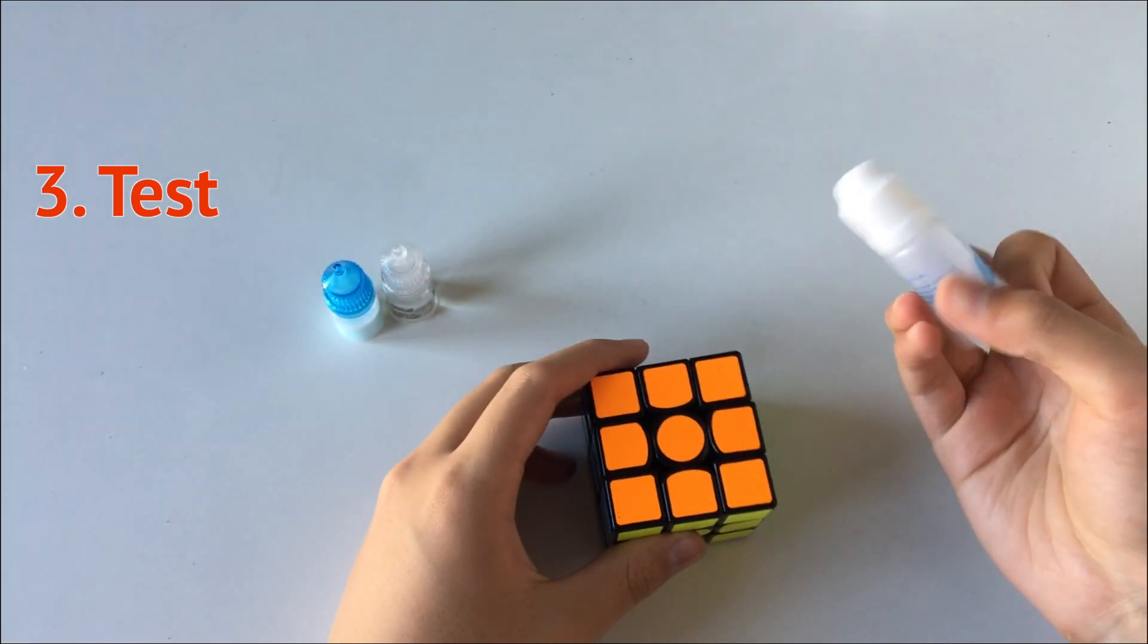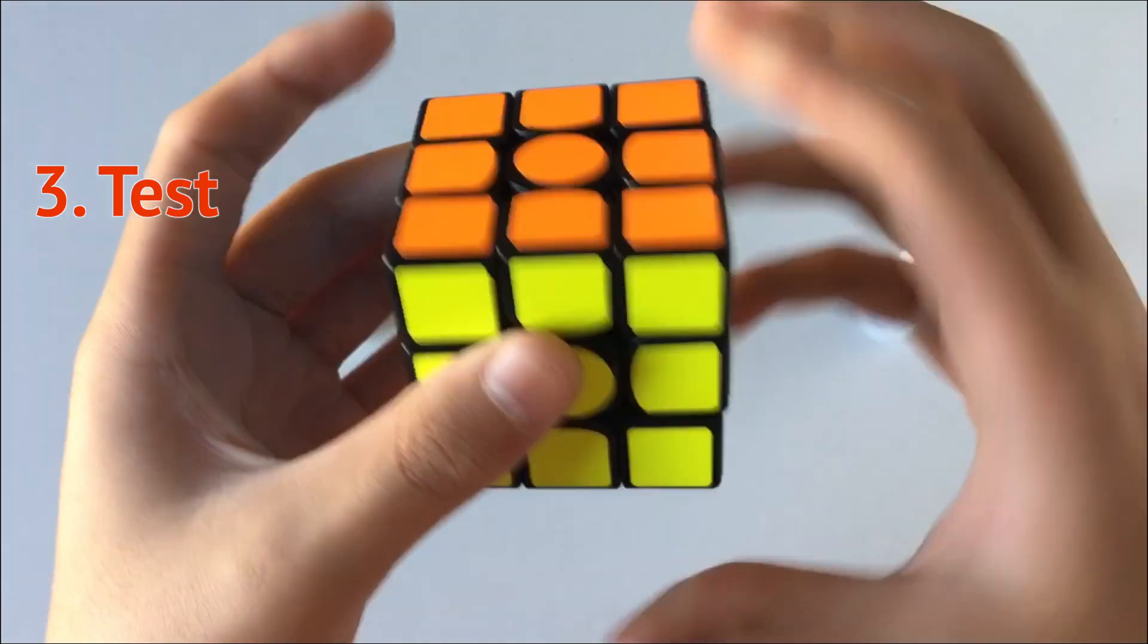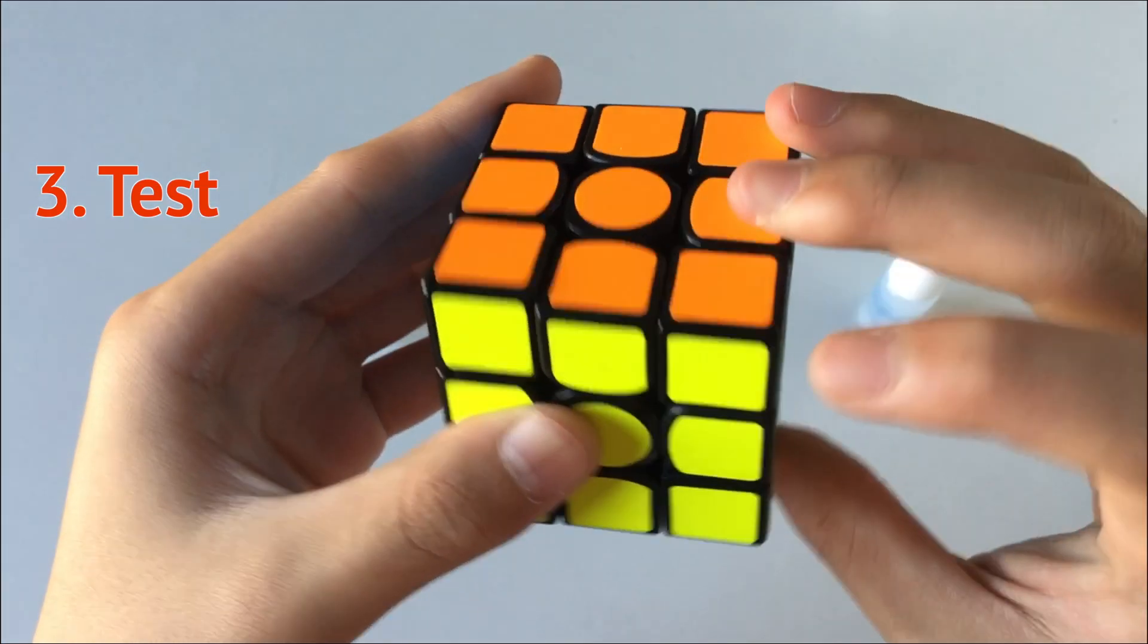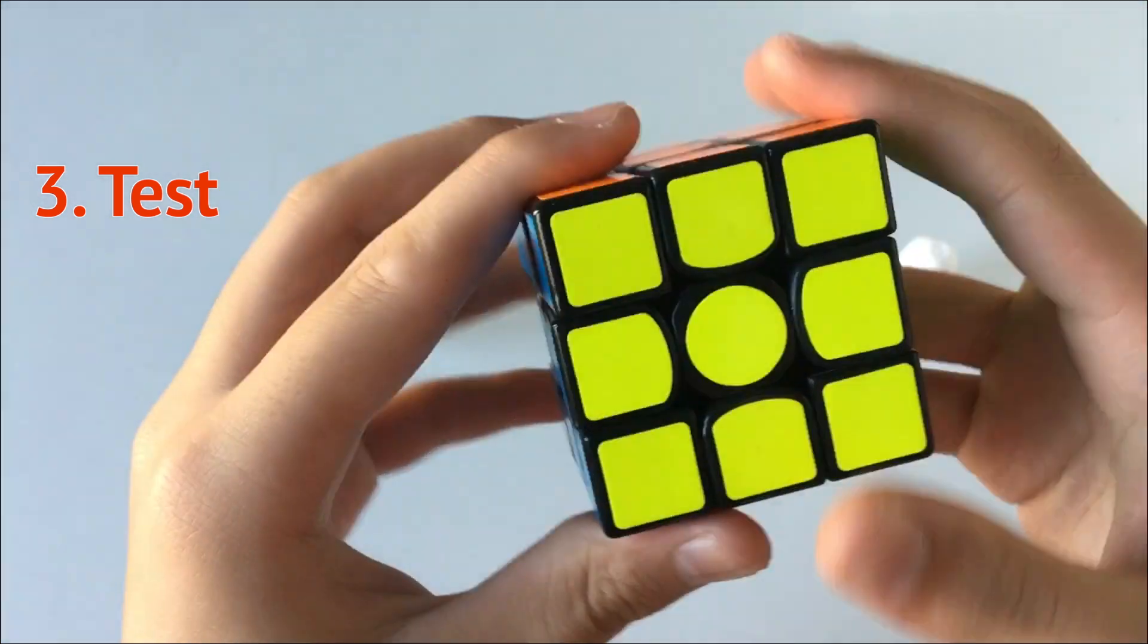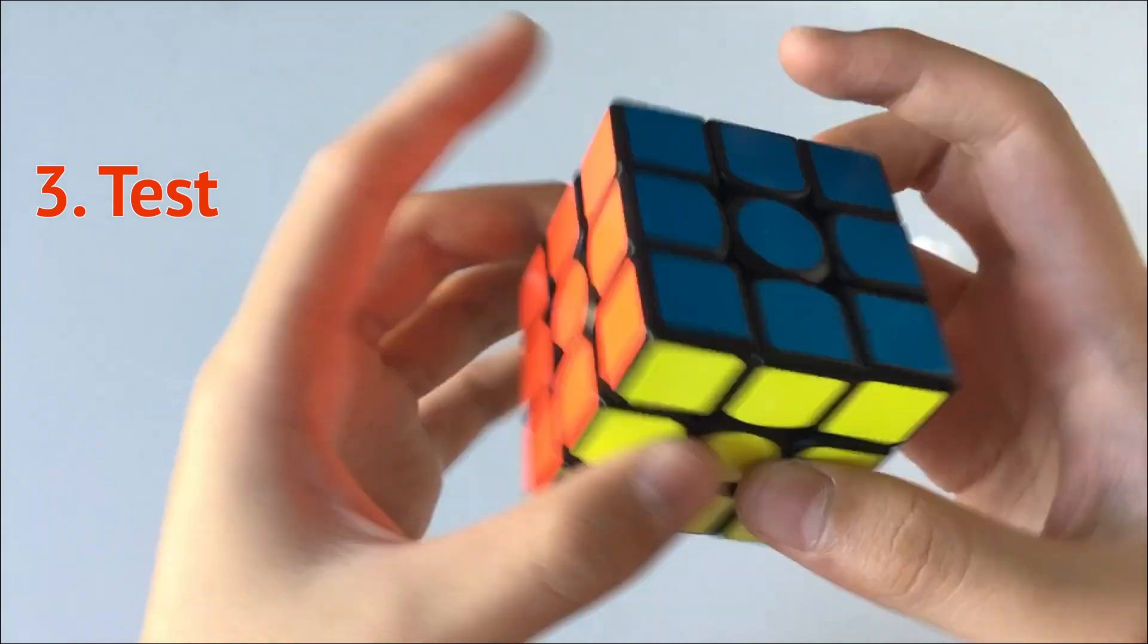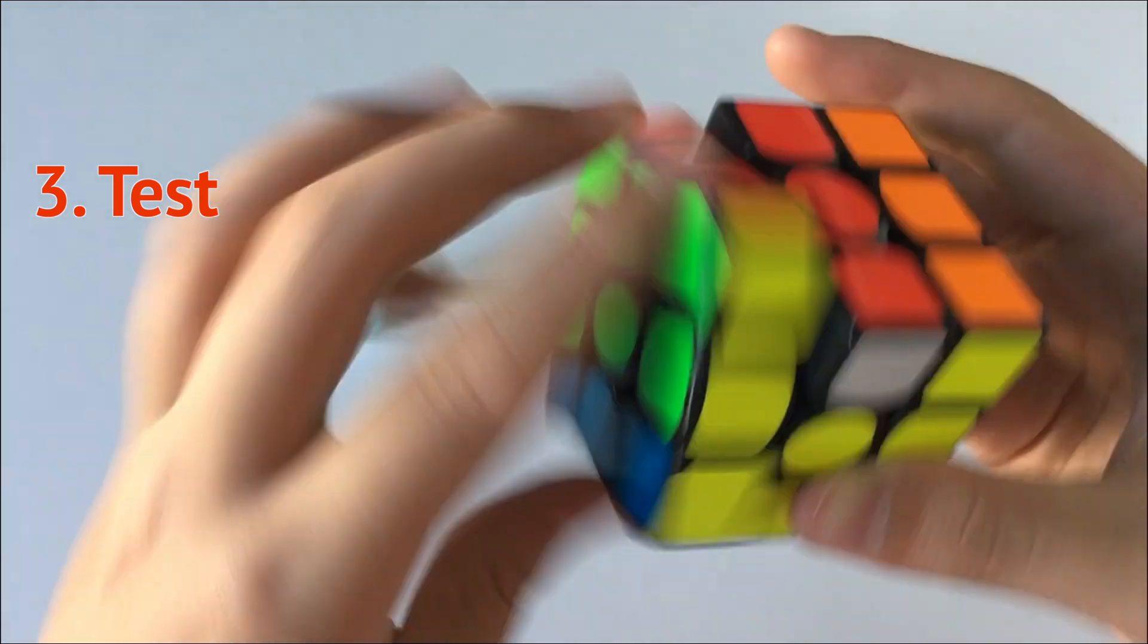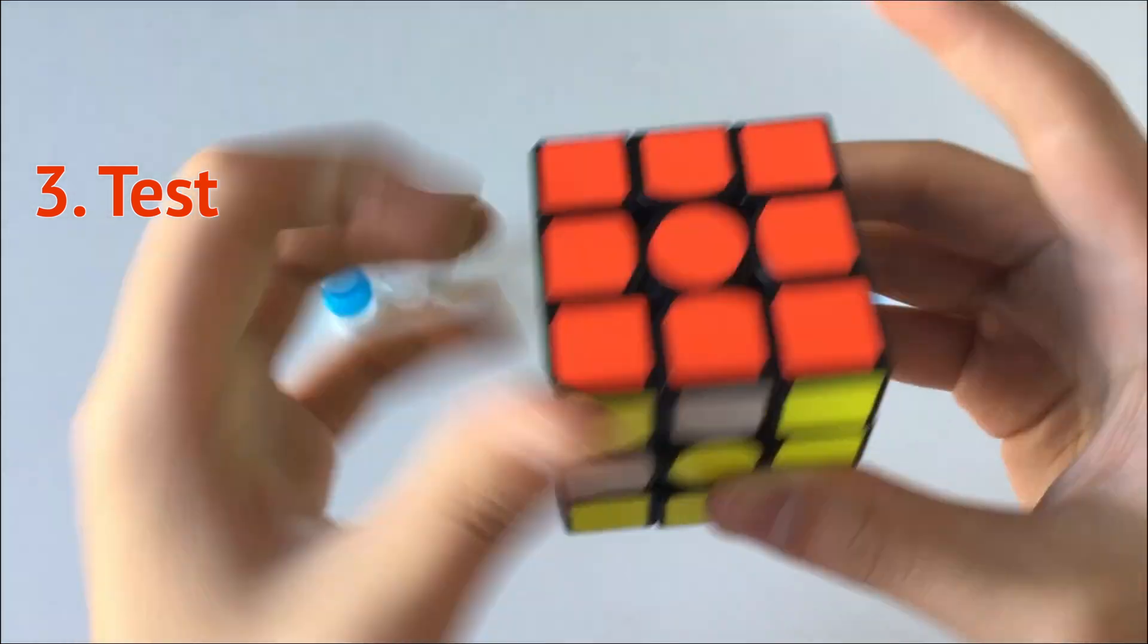I think this cube almost never gotten lube in its lifetime, maybe the factory lube. But again, I think Ethan told me this is like a really old cube. I think this is the Air but magnetic, not the Air M but not the Air SM.